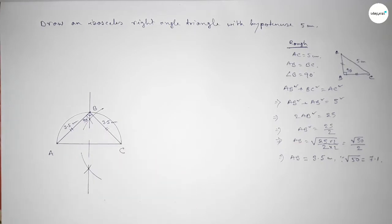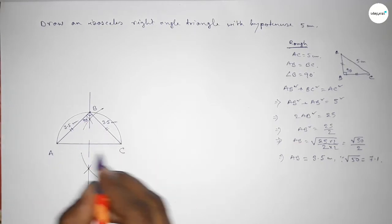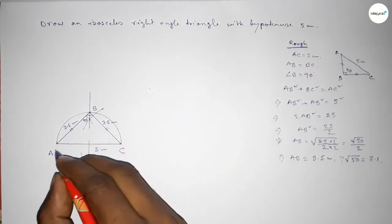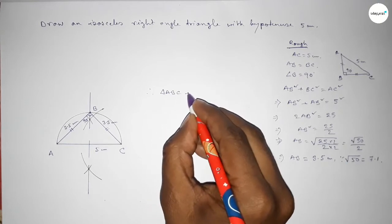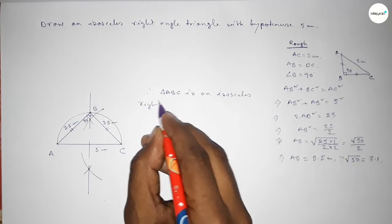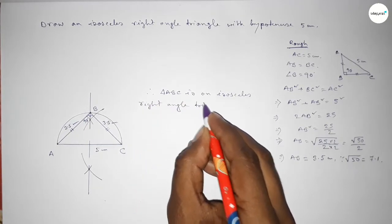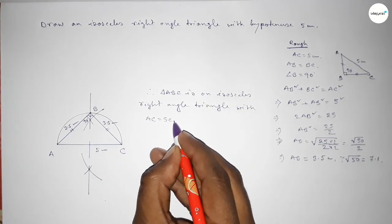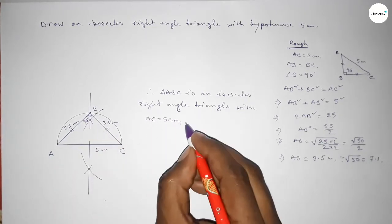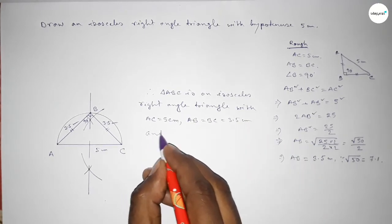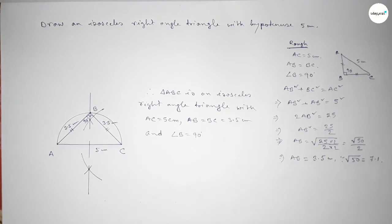Therefore, triangle ABC is an isosceles right angle triangle with hypotenuse AC equal to 5 centimeters, two equal sides AB equal to BC equal to 3.5 centimeters approximately, and angle B equal to 90 degrees. That's all, thanks for watching.